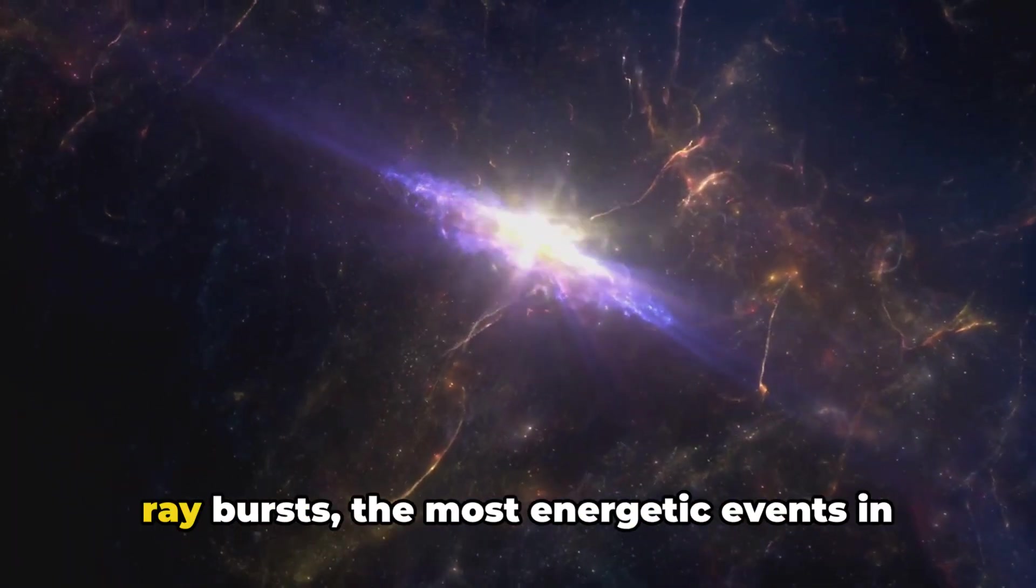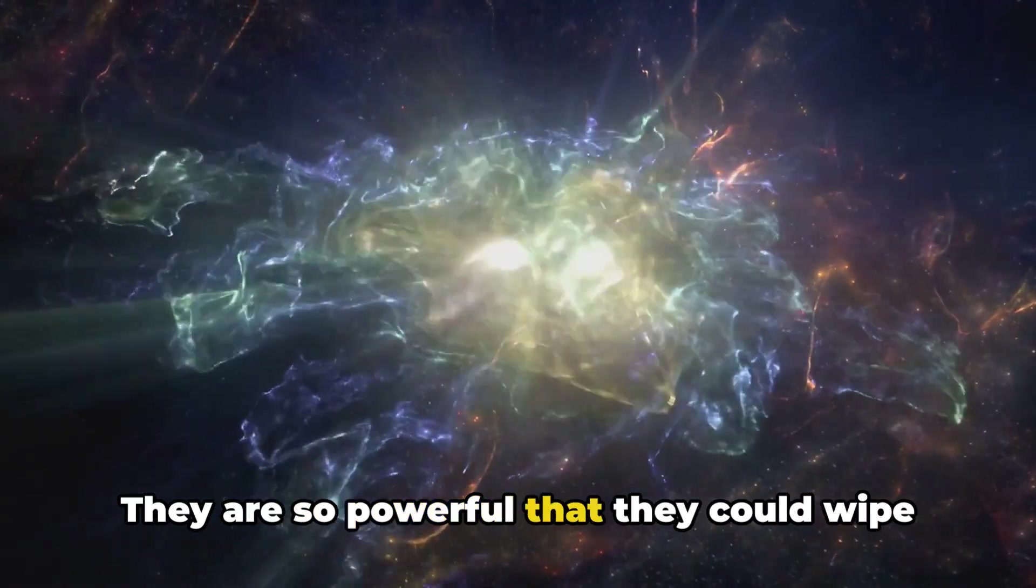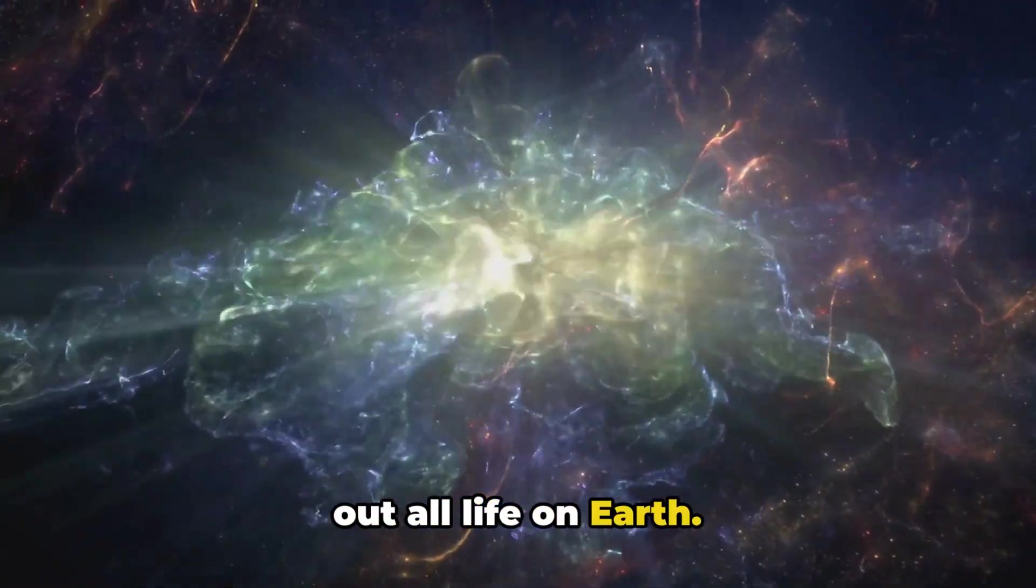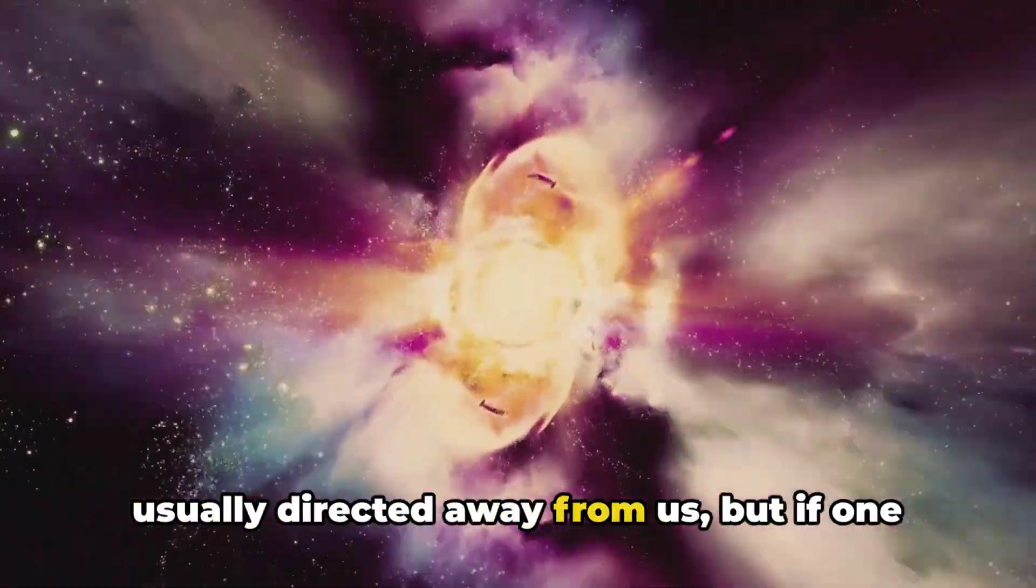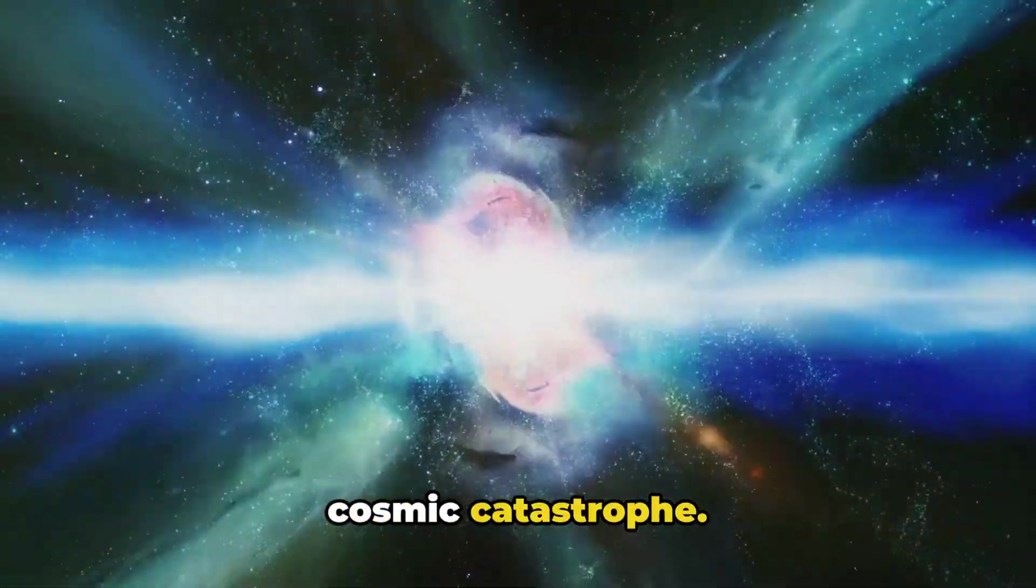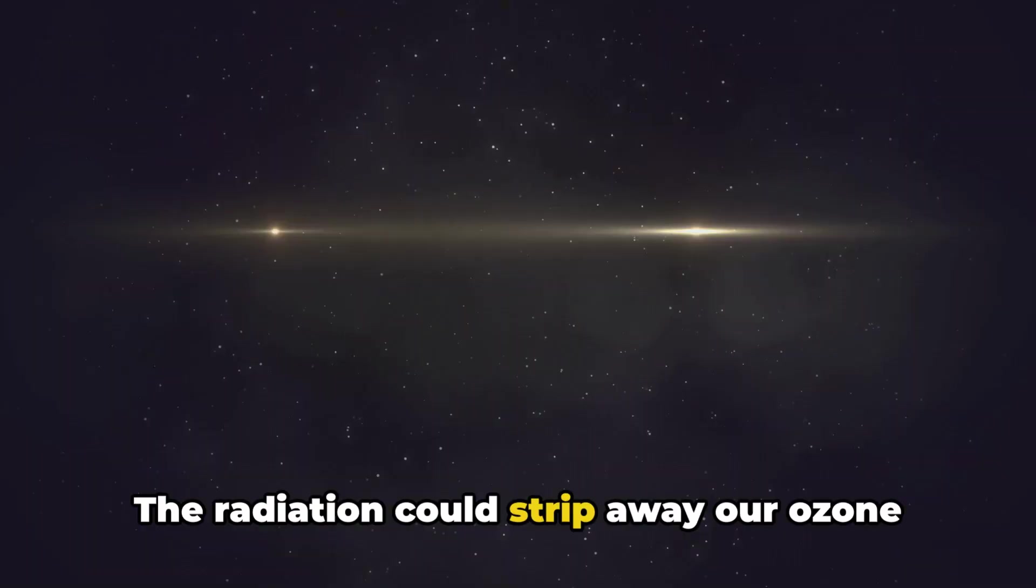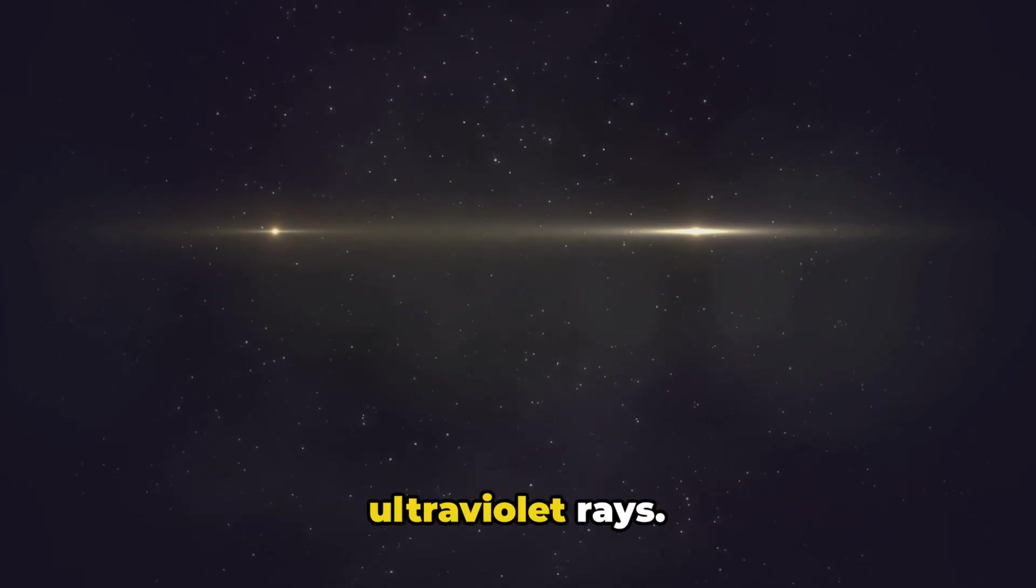Finally, we have gamma ray bursts, the most energetic events in the universe. They're so powerful that they could wipe out all life on Earth. These bursts are thankfully rare and usually directed away from us. But if one were to hit our planet, it would be a cosmic catastrophe. The radiation could strip away our ozone layer, exposing us to the sun's deadly ultraviolet rays.